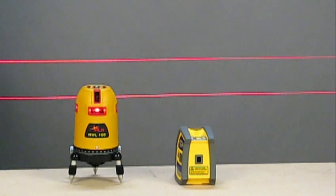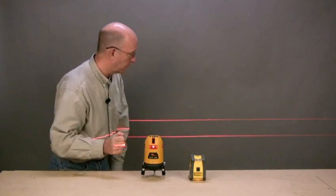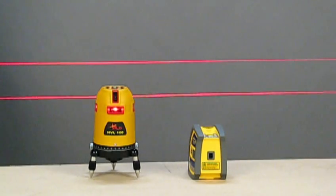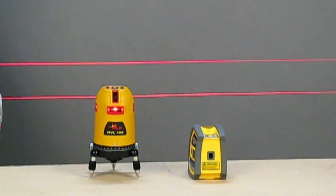Before I do, I want to remind you that the lower line is from the laser with the pendulum, and the upper line is from the laser with the servo motors. As you can see, the line from the laser with the pendulum is jumping around, but the one from the laser with the servo motors is steady.